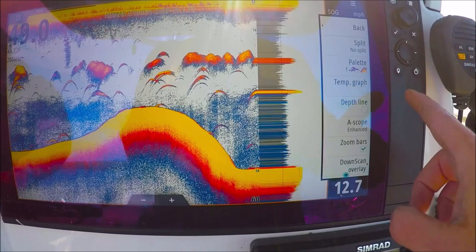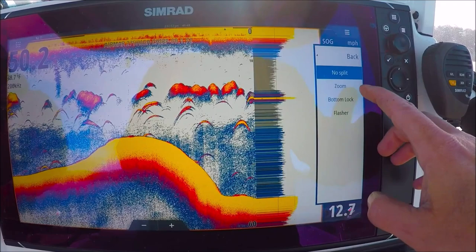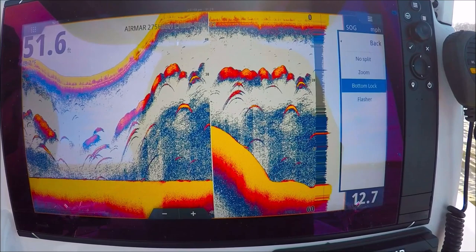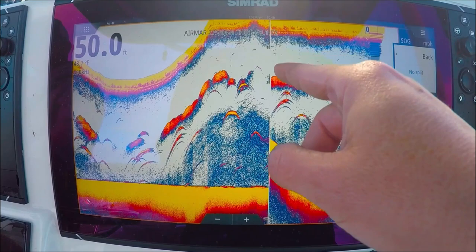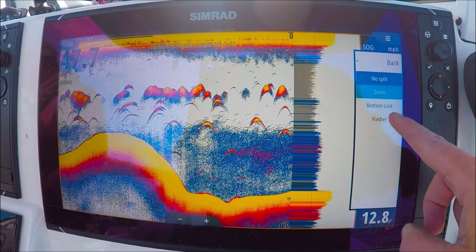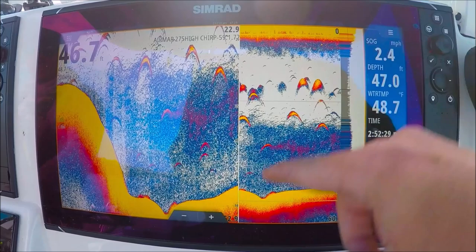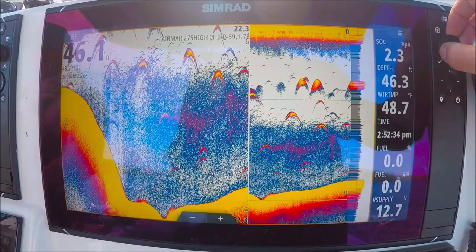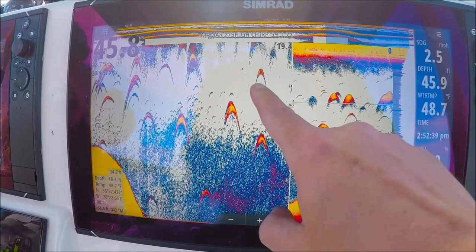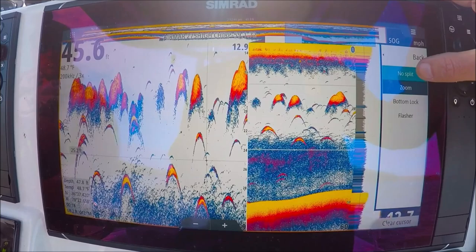Back. Okay, we got all kinds of neat stuff here. We can split the screen. Bottom lock. You can see the numbers are reversed here. Zero, ten, twenty, thirty. This lock's on the bottom. We have no split. We can do zoom. And if you turn the knob, you can see how we can zoom in wherever we'd like with the knob. We can even move the band up and down. Keep it wherever you would like. Okay, let's go no split again.